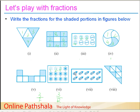Let's take pencils now. We have 1, 2, 3, 4, 5 and 5 — so the denominator is 10. And how many are shaded? All of them are shaded. So we write 10 by 10. Note that this is also a fraction, because all of them are shaded.